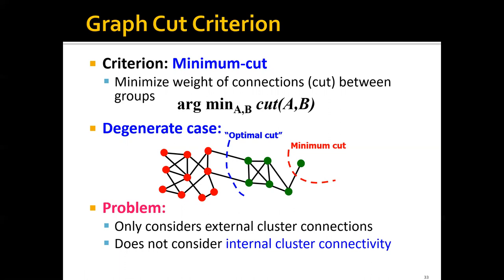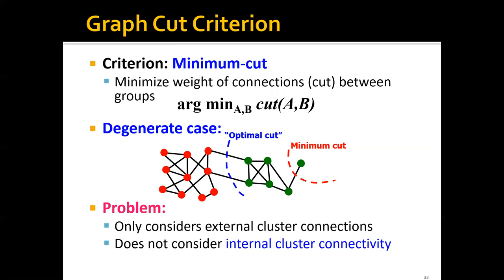So we can see that the problem here is that this cut criterion actually only considers the external cluster connections, but it does not consider internal cluster connectivity.